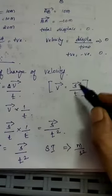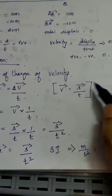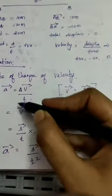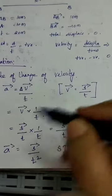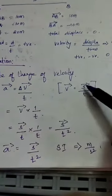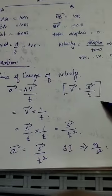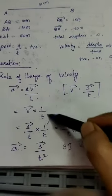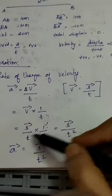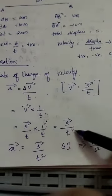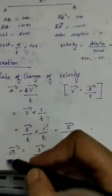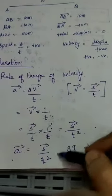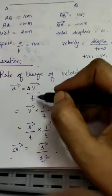Now, velocity equals displacement divided by time. So substituting: acceleration equals change in velocity divided by time, which becomes displacement divided by time, then multiplied by one over time. Multiplying these gives displacement divided by t squared. So acceleration can also be written as displacement by time squared, or simply as change in velocity divided by time.